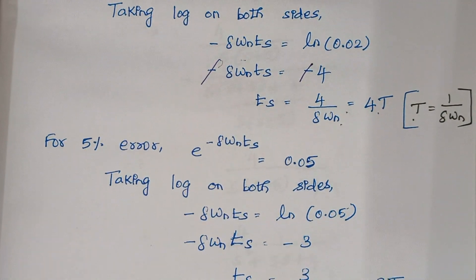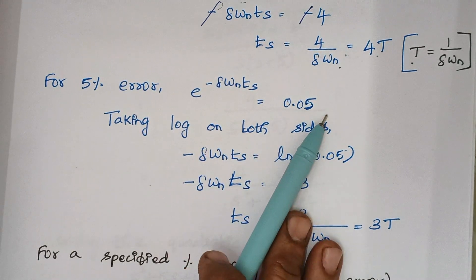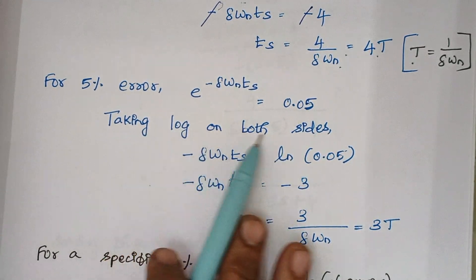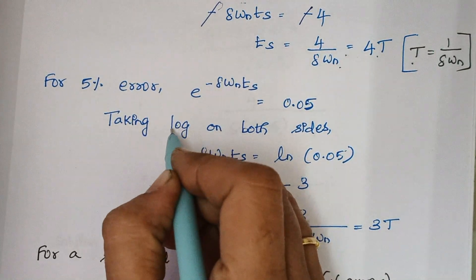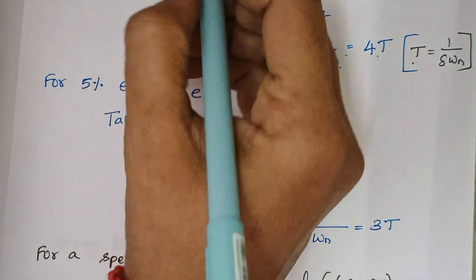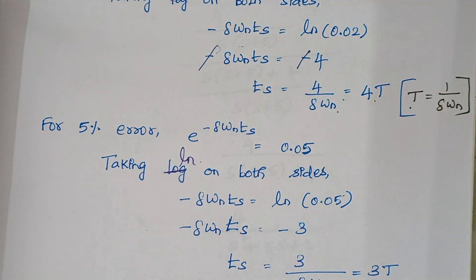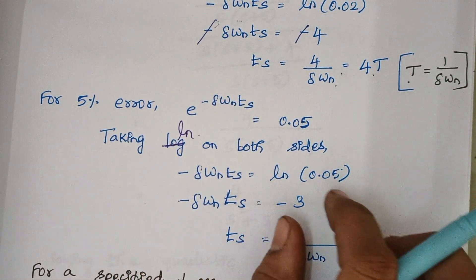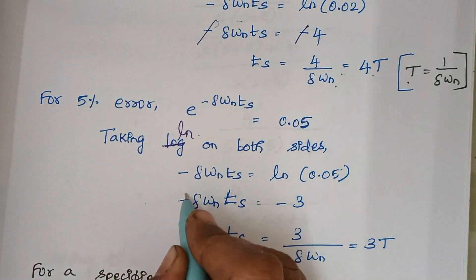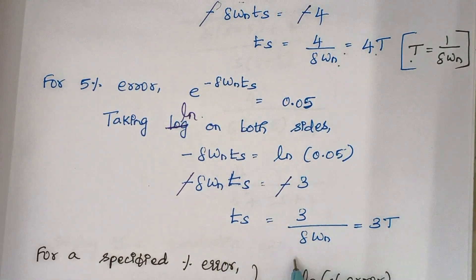For 5% error, we equate this exponential term to 0.05. Again taking the natural log on both sides, the equation becomes minus zeta omega_n t_s equals ln(0.05), which equals minus 3. Both negative signs cancel each other, and our final expression is 3 divided by zeta omega_n, which equals 3T.